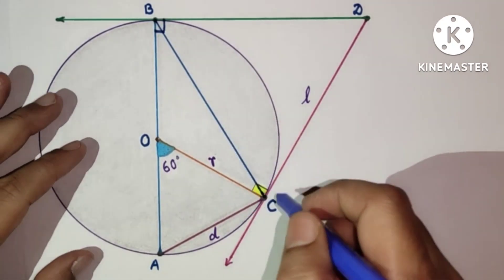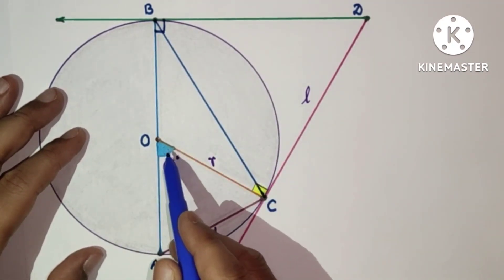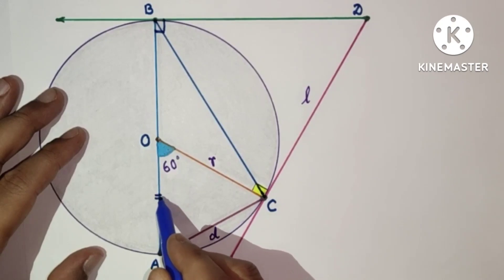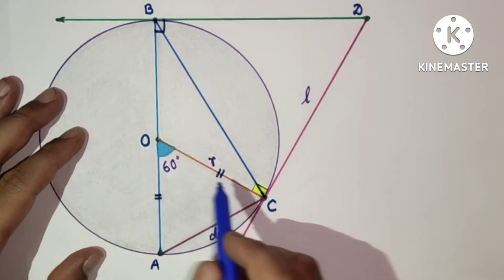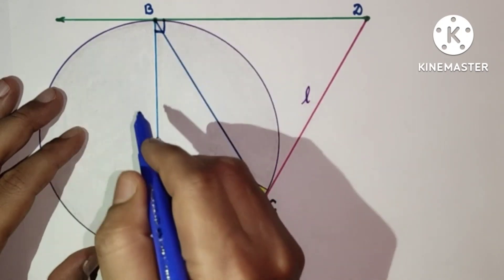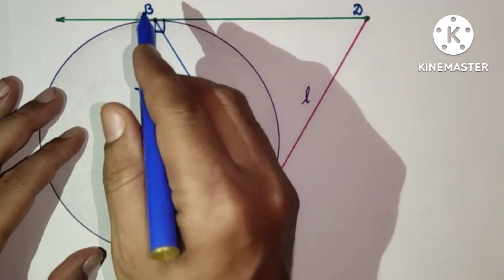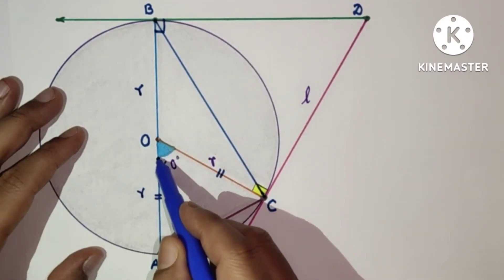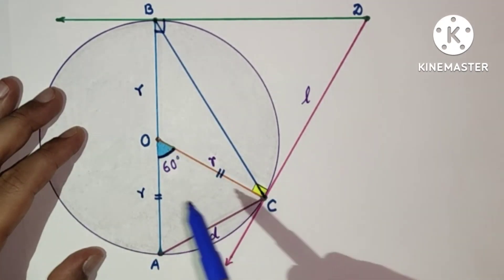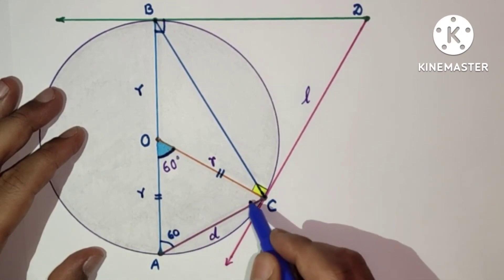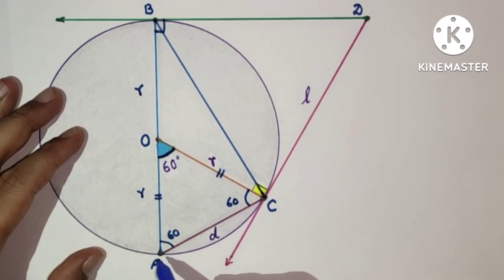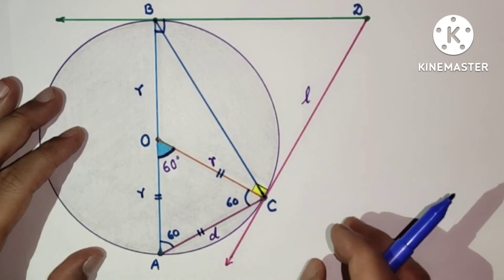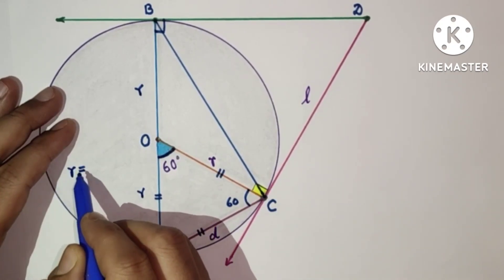So we have joined CB. This angle is 60 degrees and these two are equal: OA equals OC, both radius. This is R, so this will also be R, and OB will also be R. AB is 2R. So this is an isosceles triangle and this angle is 60 degrees. If any one angle of an isosceles triangle is 60, then that triangle will be an equilateral triangle. So all will be 60 degrees, all sides equal. So R is equal to D.